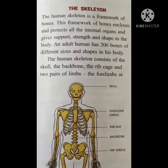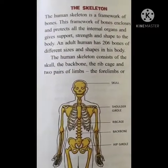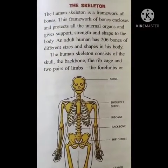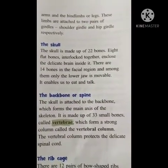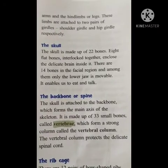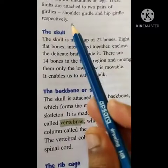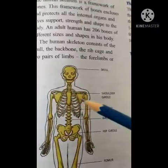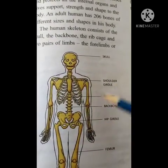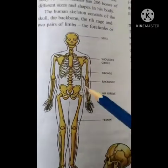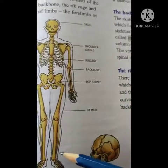An adult human has 206 bones of different sizes and shapes in the body. The human skeleton consists of the skull, backbone, rib cage and two pairs of limbs — forelimbs which are the arms, and hind limbs which are the legs. These limbs are attached to pairs of girdles — shoulder girdle and hip girdle respectively. The hands are called forelimbs and the legs are called hind limbs attached to the shoulder girdle and hip girdle.